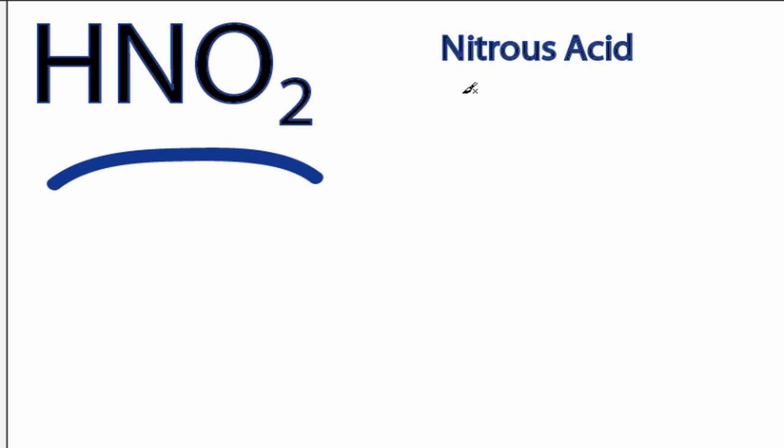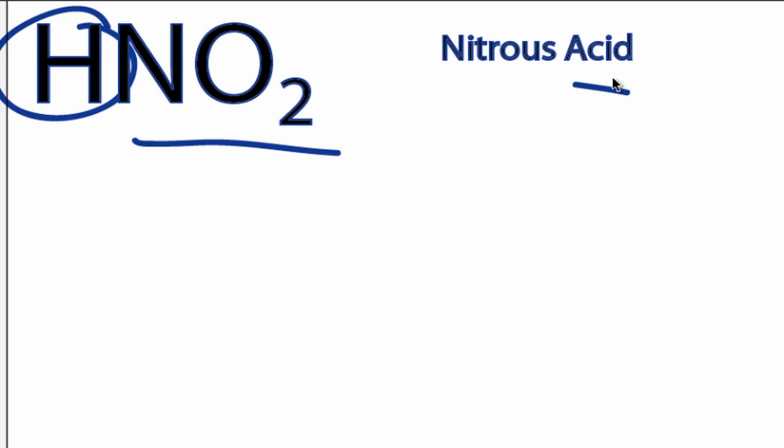This is the HNO2 Lewis structure, nitrous acid. When we have an H in front of a polyatomic ion like NO2 or SO3, we know it's going to be an acid, and the hydrogen is going to go on the outside of one of the oxygens.